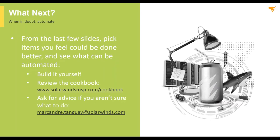When in doubt, automate. From everything covered so far, pick the item you feel can be done better and build something to automate it — monitoring, automation, self-healing, whatever. Review the cookbook to find things you can do through the platform that already exist, because we spend many hours every week creating stuff for you guys. All you have to do is copy, paste, and use it. And if you don't know what to do or want advice, just email me — I get emails from partners every day saying 'I'm trying to do X, what do you recommend?'